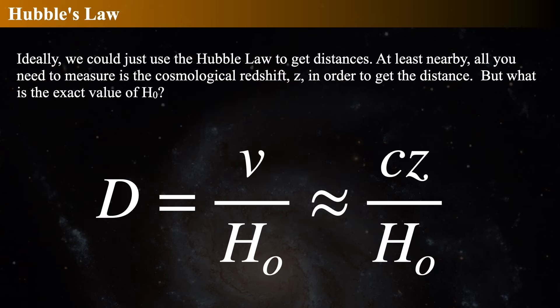Now we're going to look at how we know the distances to the galaxies, and we start from the idea of Hubble's Law. Hubble's Law relates the distance D to the recession speed of the galaxy—how fast its redshift indicates it's rushing away from us. Distance is proportional to the speed V rushing away from us, inversely proportional to the Hubble constant H naught. For nearby galaxies, we can measure the redshift Z, which is the shift in the wavelength of light from its rest wavelength times the speed of light C, divided by H naught. The trick is figuring out this H naught number.